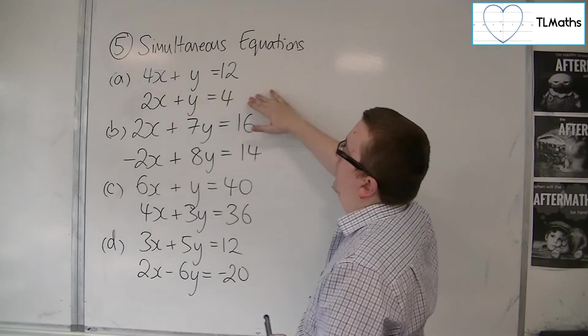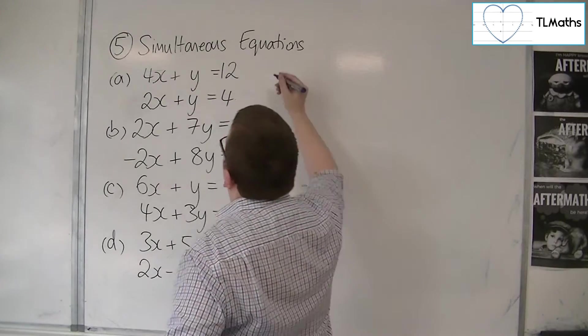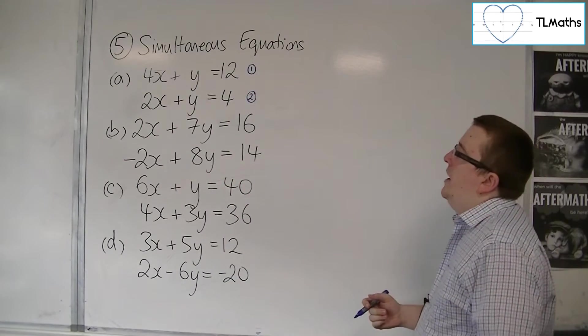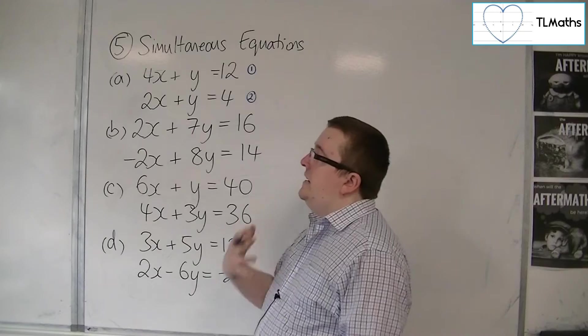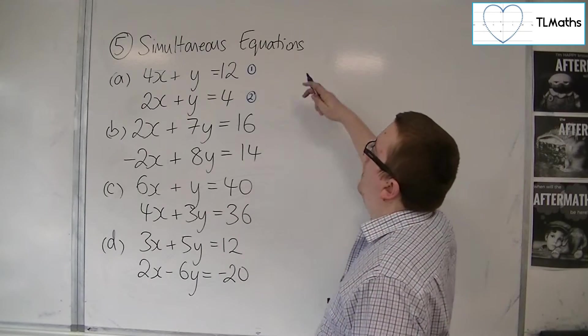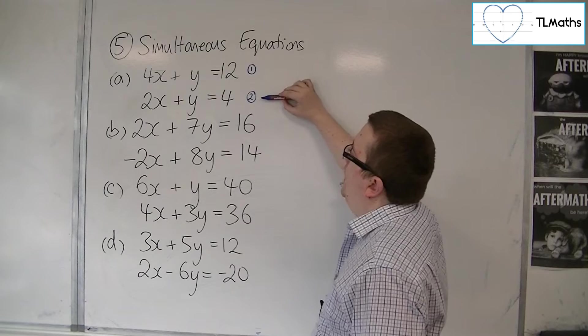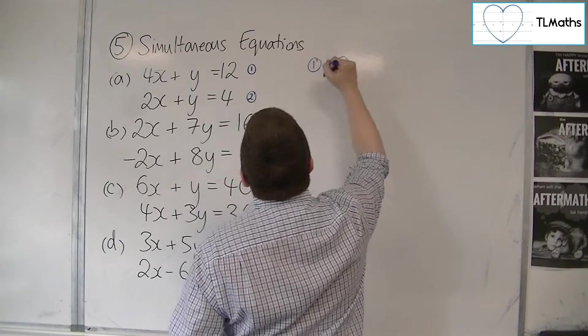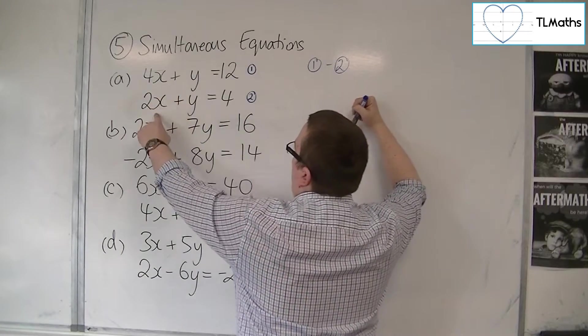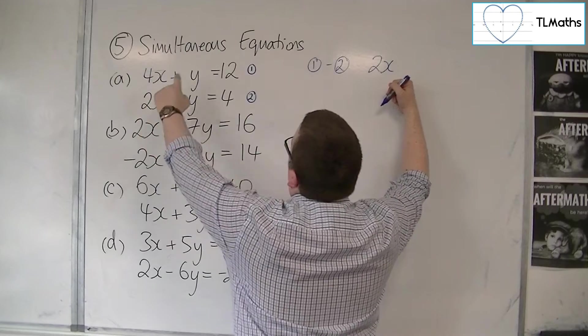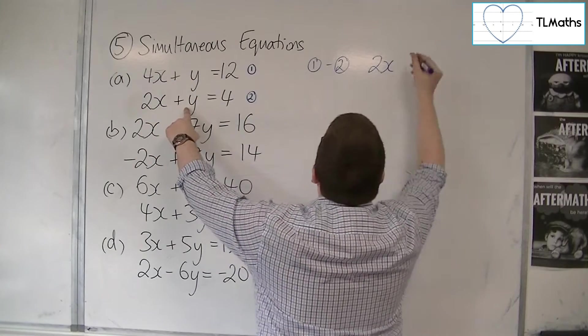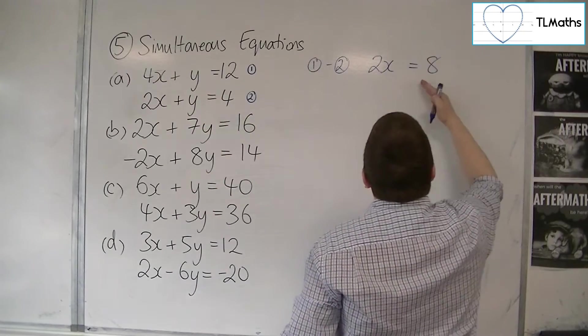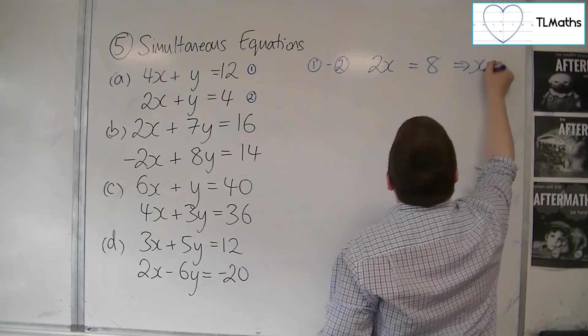So, if we look at 4x plus y equals 12 and 2x plus y equals 4. If I number these equations, it's quite useful to do that. Then, what we can see is that we can easily eliminate the y's by subtracting equation 2 from equation 1. So, if we do equation 1 take away equation 2, we get 4x take away 2x is 2x. y take away y is 0. And then we've got 12 take away 4 is 8. So, if 2x is equal to 8, then x is equal to 4.